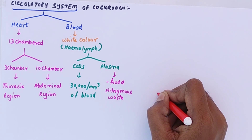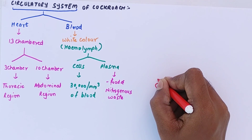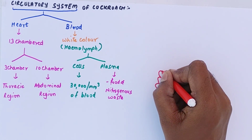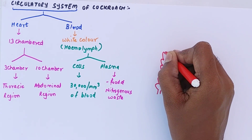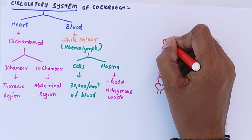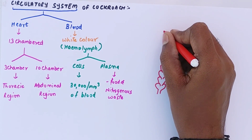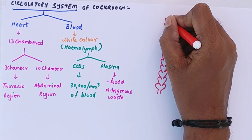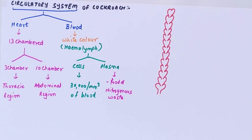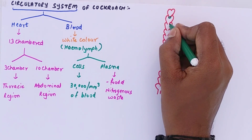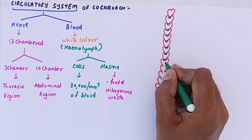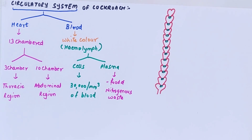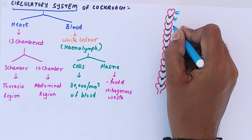Now we need to understand how to draw the heart of the cockroach. It is a 13-chambered heart — remember the normal heart shape we draw. This is how the 13-chambered heart is drawn in the cockroach's body. Each chamber has one small opening called ostia, and the role of ostia is to allow entry of blood into the heart.